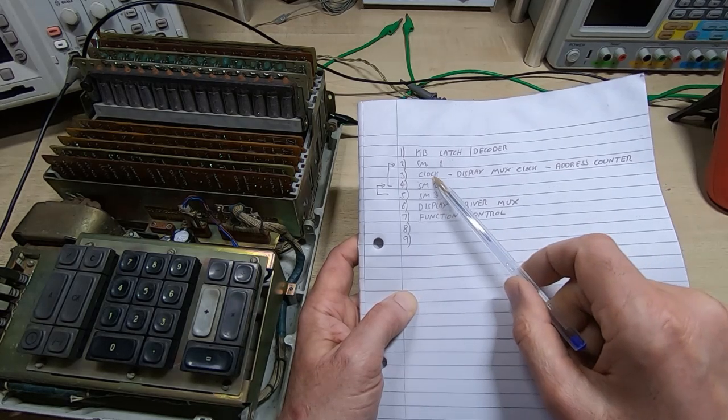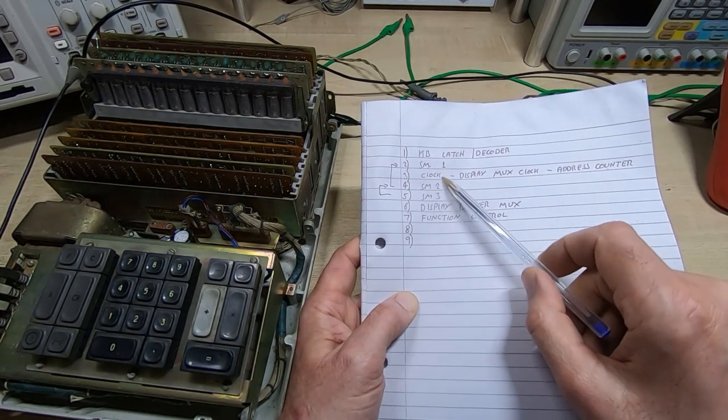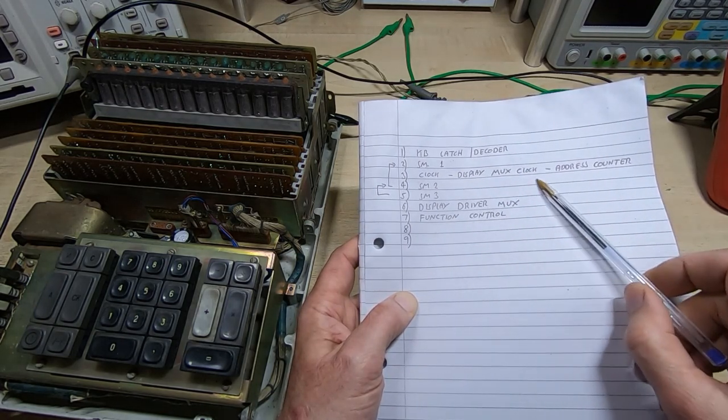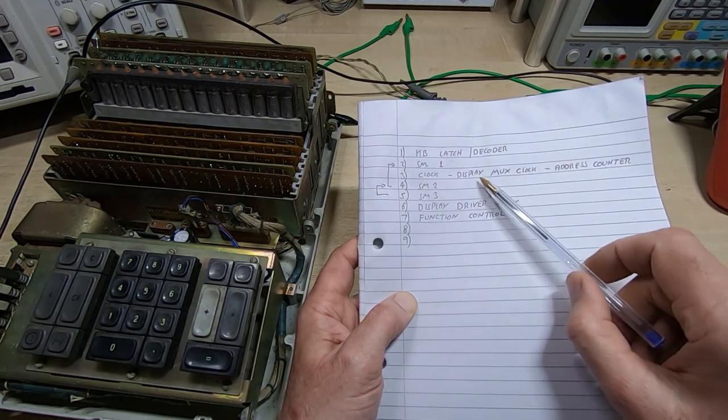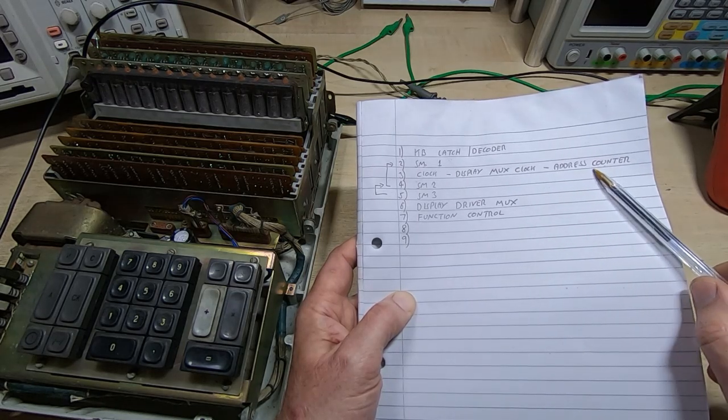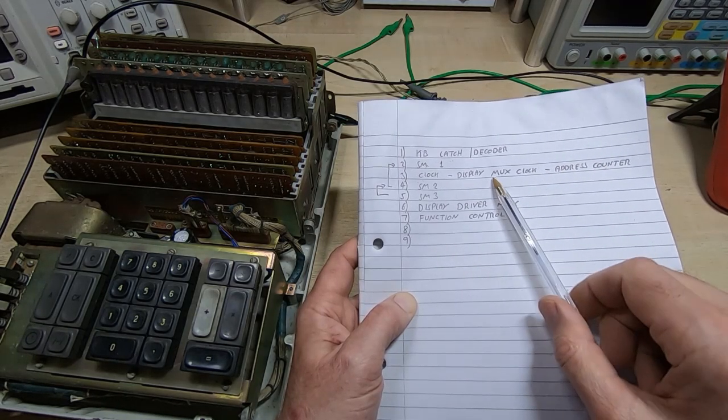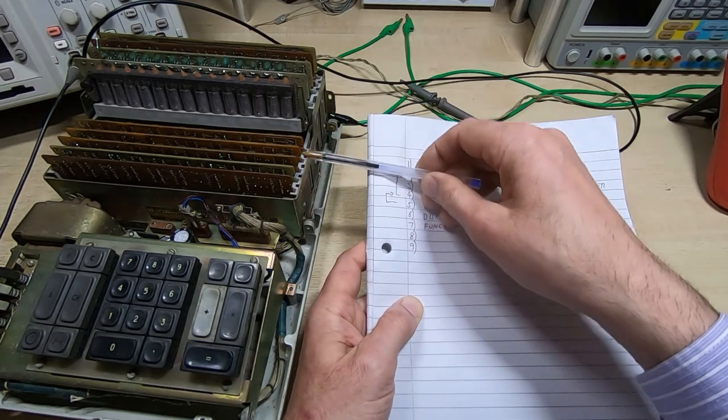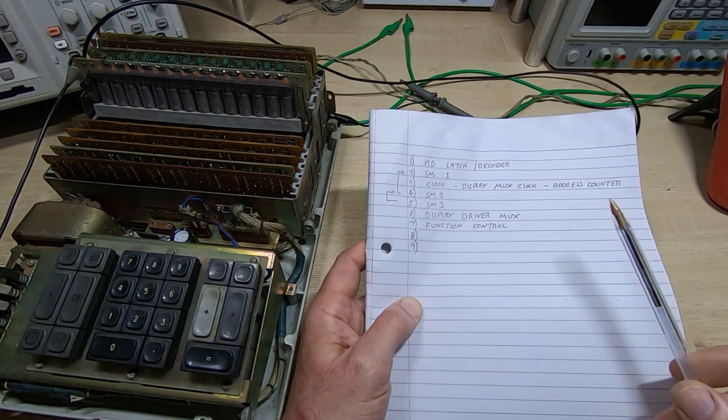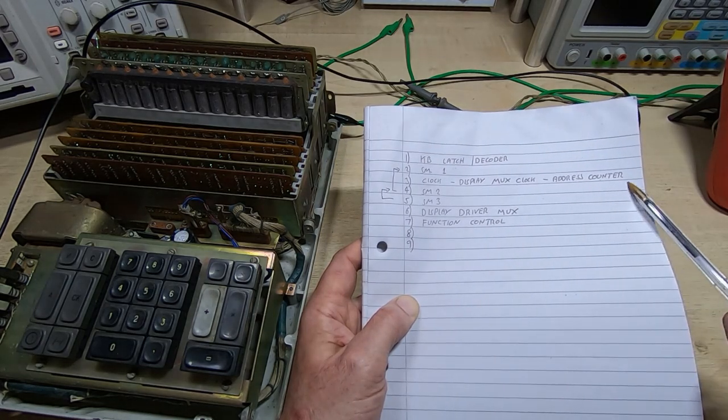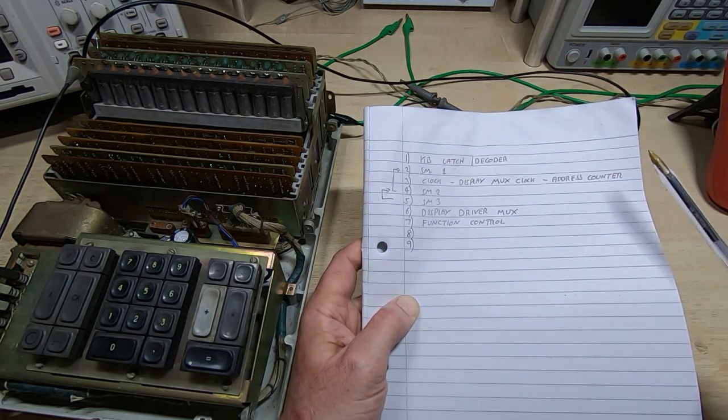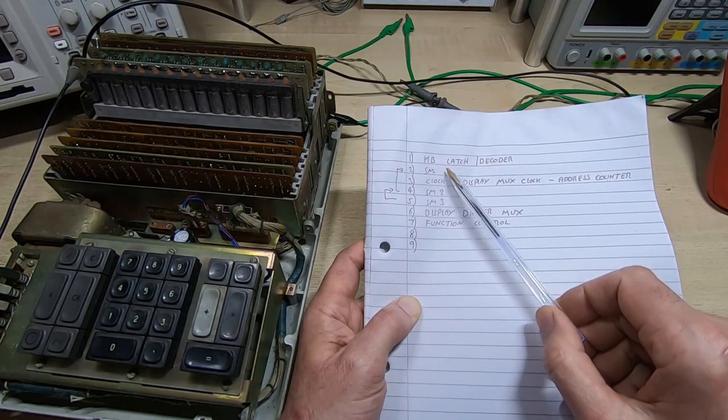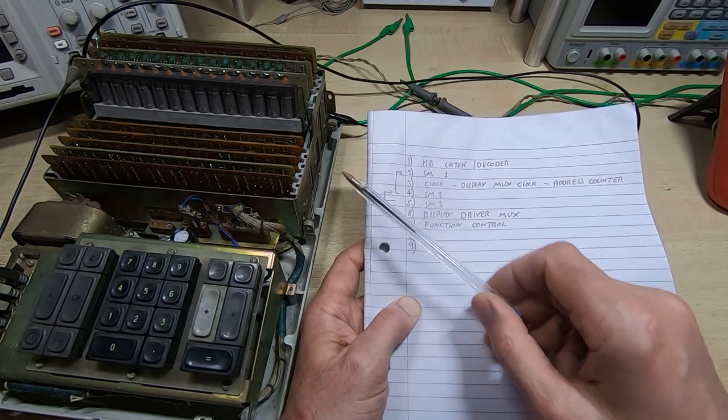Board three has got a clock on it, very obvious looking at it because it's one of the only boards that has some capacitors on it. So it's fairly obviously a clock and putting the scope on there it's about a 30 kilohertz clock. Looking through that we had two counters, one's a one of 15 counter and one's a six bit binary counter.